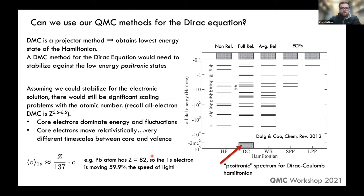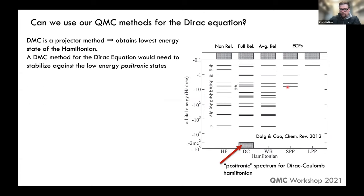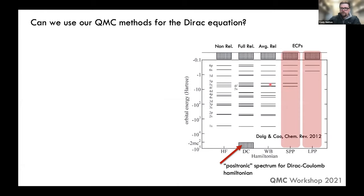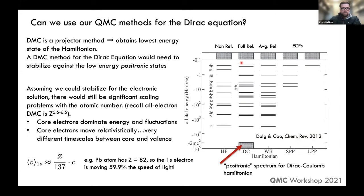All of this suggests we don't want to deal with the full Dirac equation. Instead, we can leverage the pseudopotential idea. Normal pseudopotentials match to an averaged relativistic Hamiltonian, but maybe we can modify a pseudopotential in an appropriate way to generate the splitting seen in the fully relativistic Hamiltonian. If so, we can incorporate spin-orbit coupling with pseudopotentials at similar cost in QMC calculations.